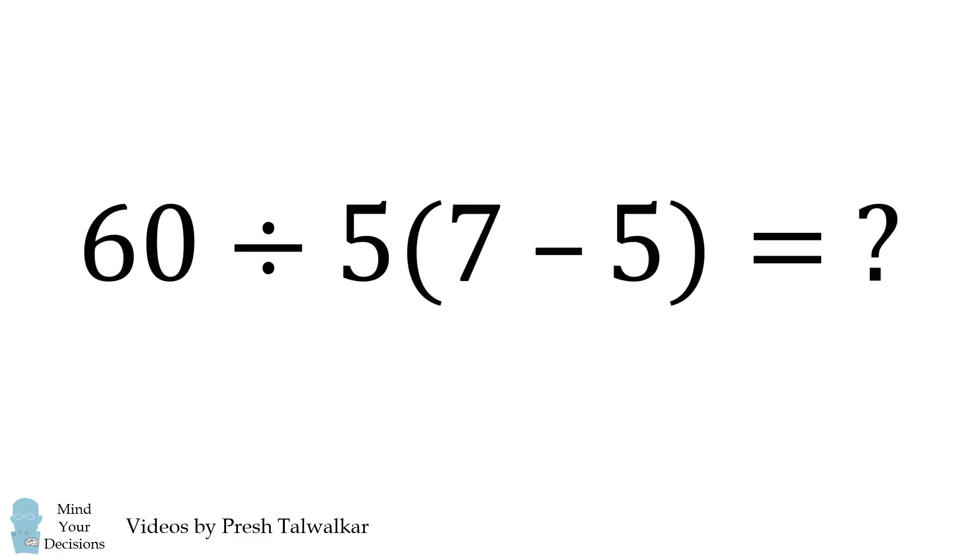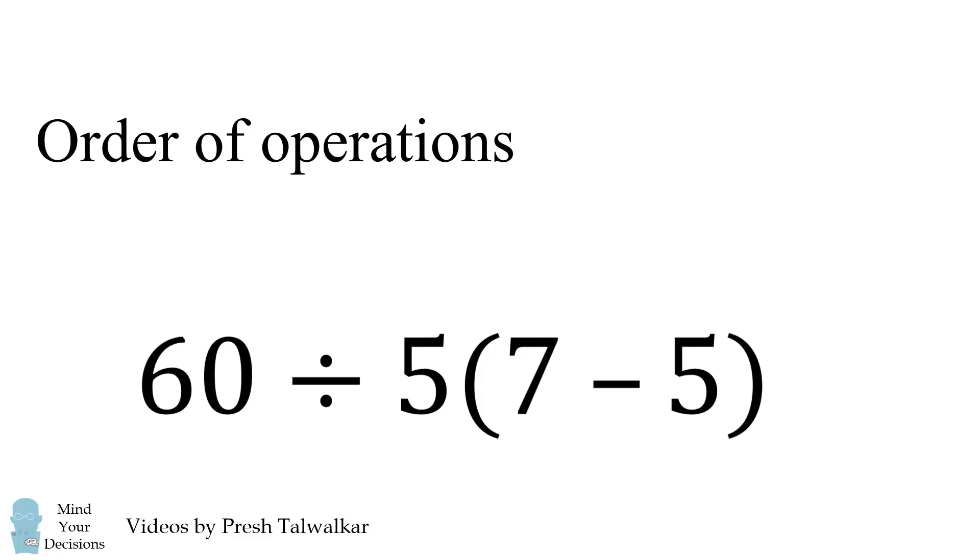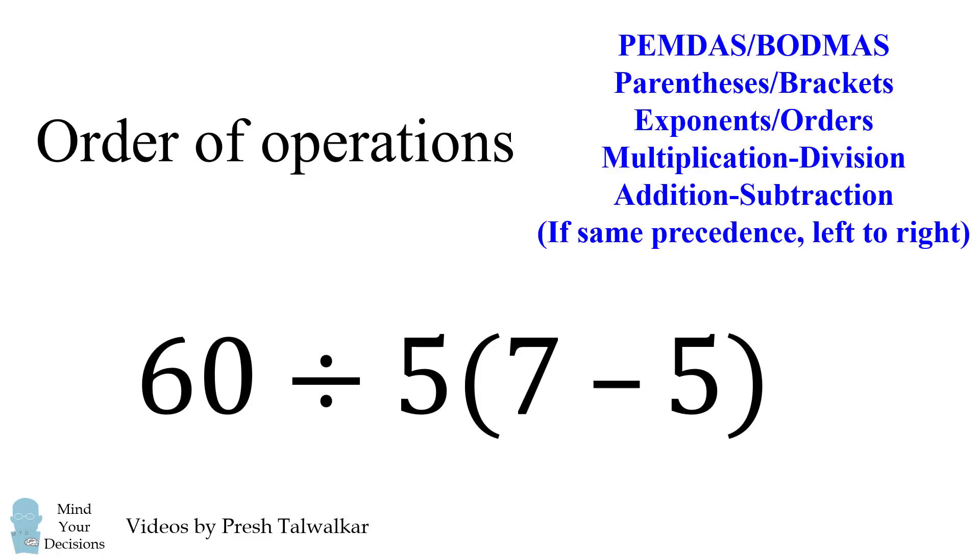The problem is 60 divided by 5 parentheses 7 minus 5. What is this equal to? We'll solve this using the order of operations. This is commonly referred to as PEMDAS or BODMAS.